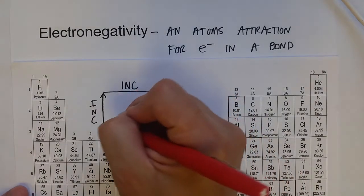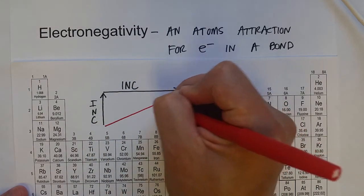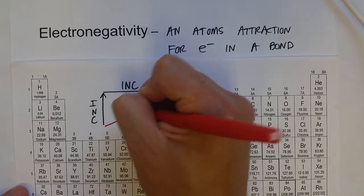So it also increases as we go from bottom to top. So a general trend is from the bottom left of the periodic table to the top right, electronegativity increases.